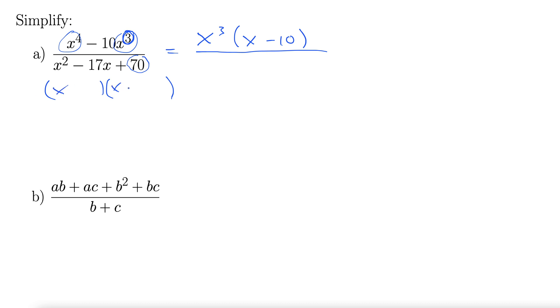Two numbers that multiply to 70, but add to negative 17. Well, 70 is 10 times 7. 10 plus 7 is 17. So what if we did negative 10 times negative 7? That does the trick. There we go.